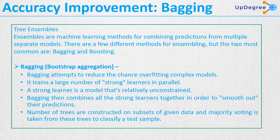Bagging uses combinations with repetitions to produce multi-sets of the original data. On the other hand, boosting is an iterative technique which adjusts the weight of an observation based on the classifications. That is the basic theme behind bagging and boosting.